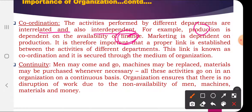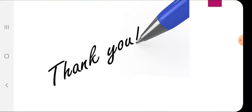Unless the production department produces goods, the marketing and sales departments cannot become active — all departments are linked together through coordination, secured through organization. Finally, organization ensures continuity. Men may come and go, machines may be replaced, and materials may be purchased as needed, but organization must ensure there is no interruption due to non-availability of men, machines, materials, or money. Organization is a continuous process.